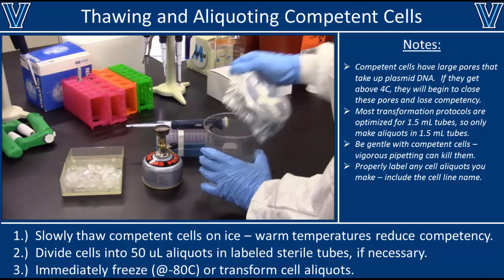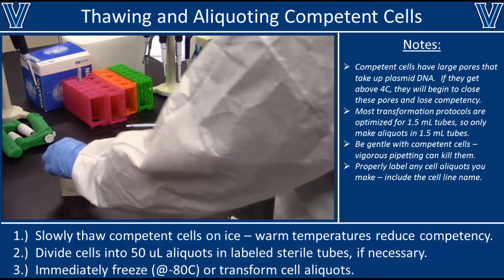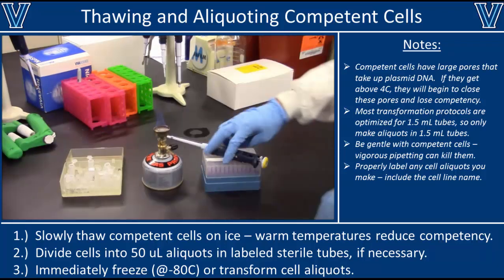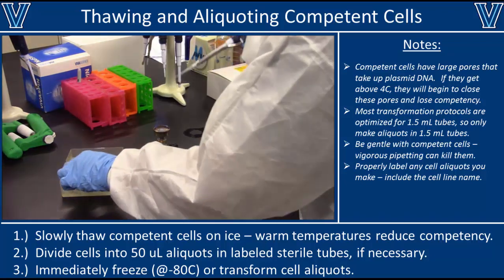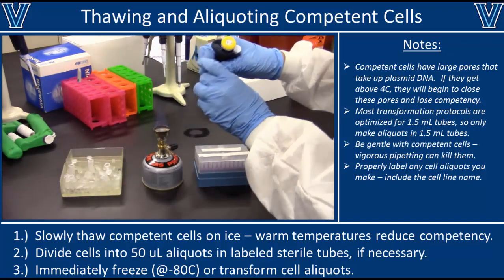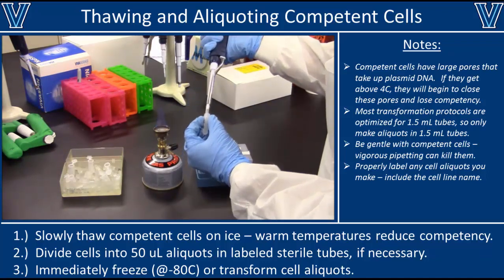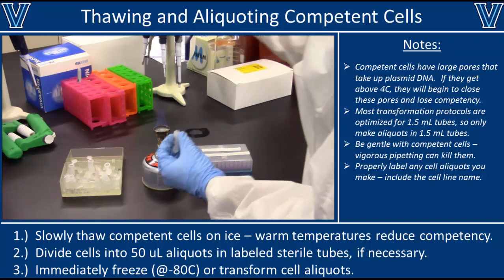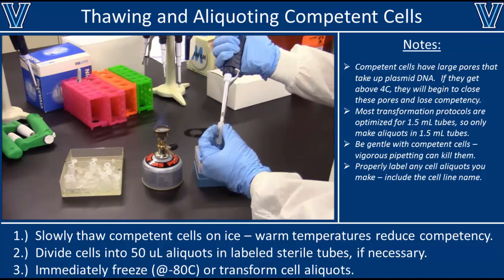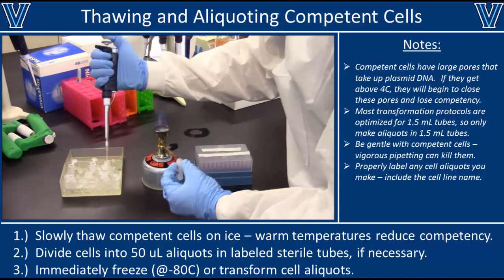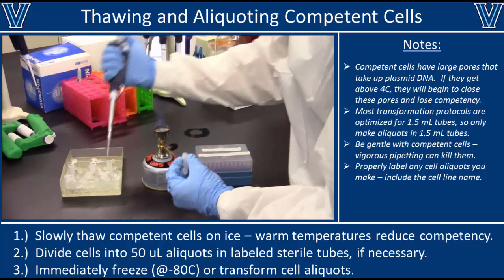Once the bench is dry, light a Bunsen burner to keep the air around the bench sterile. Next, place some sterile Eppendorf tubes in the ice bath next to the thawing competent cells. Once your competent cells have thawed, split them into 50 microliter aliquots in the chilled Eppendorf tubes. Keep one aliquot for every transformation reaction you plan on performing, and put the rest back in the -72 degrees C freezer — in the future you can thaw these smaller aliquots instead of the larger cell vials.